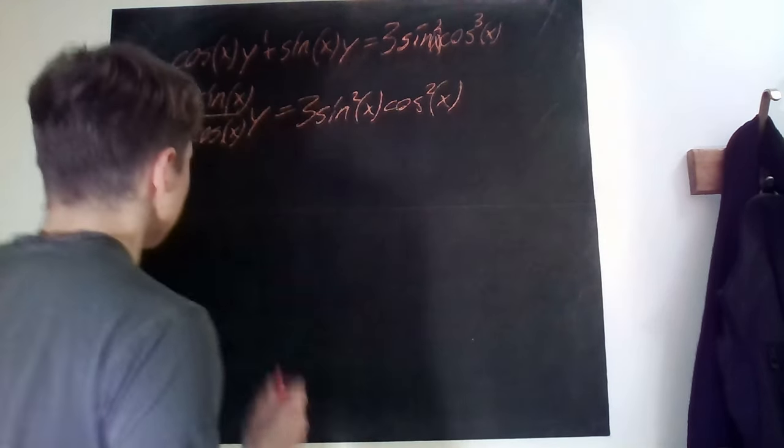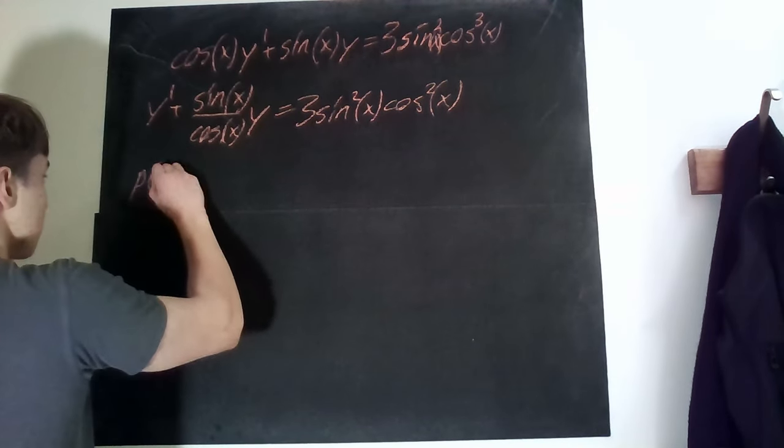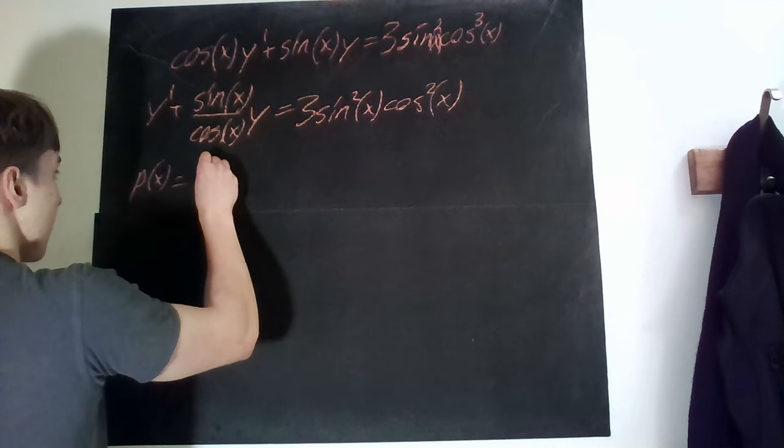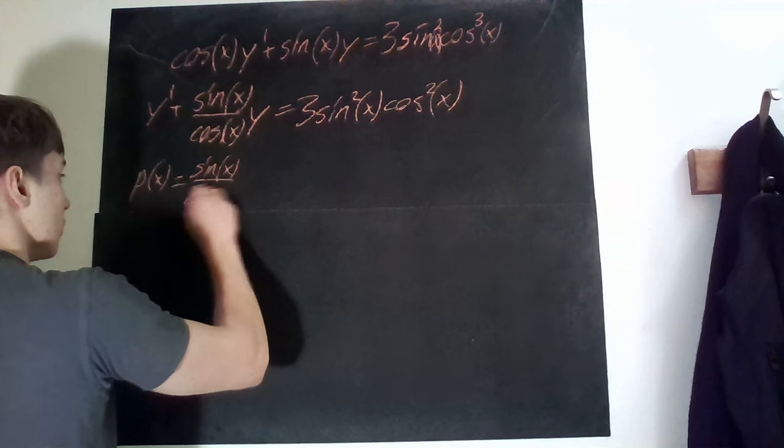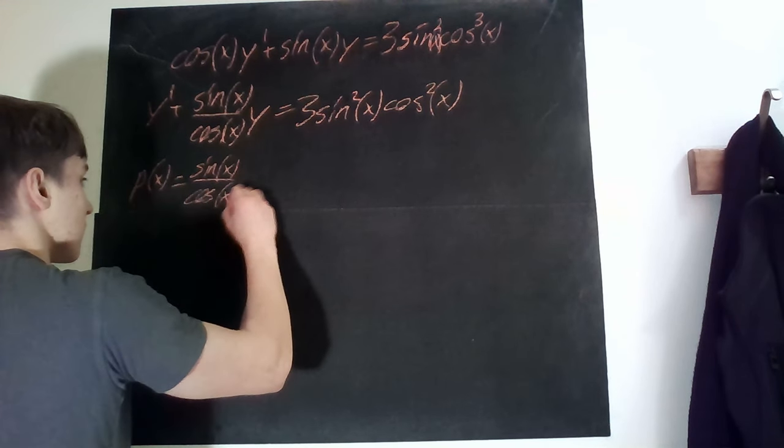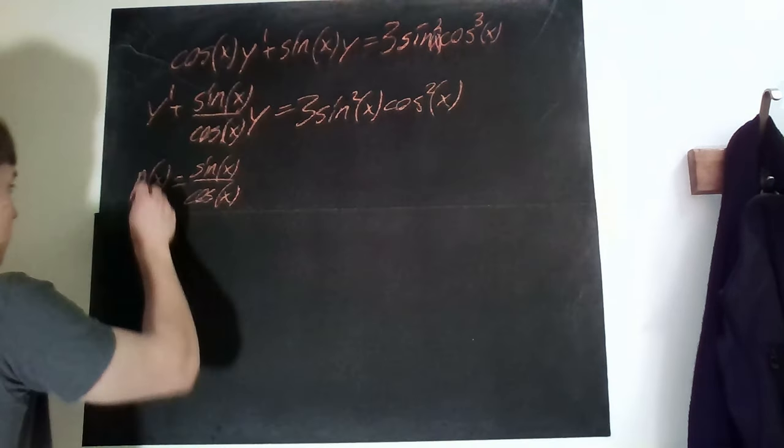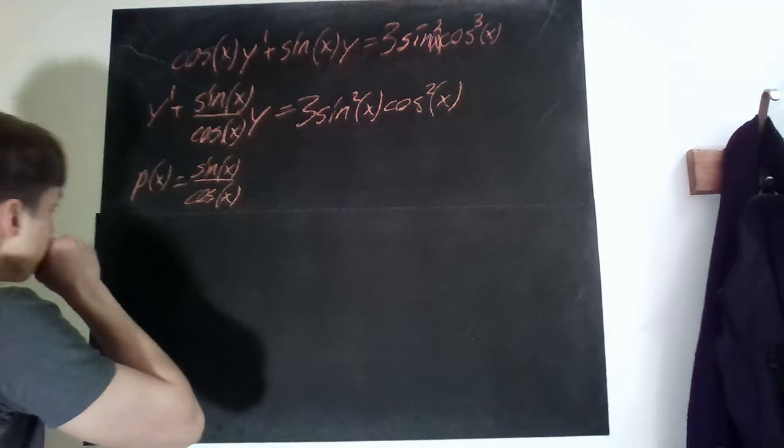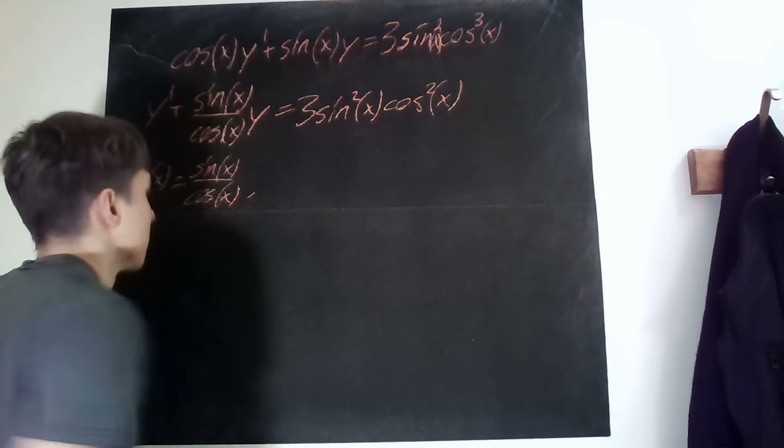And now we would get that our function p of x is then equal to sine x over cosine. As you know, the integrating factor is e to the power of the primitive function of p, so firstly we need to find the primitive function.